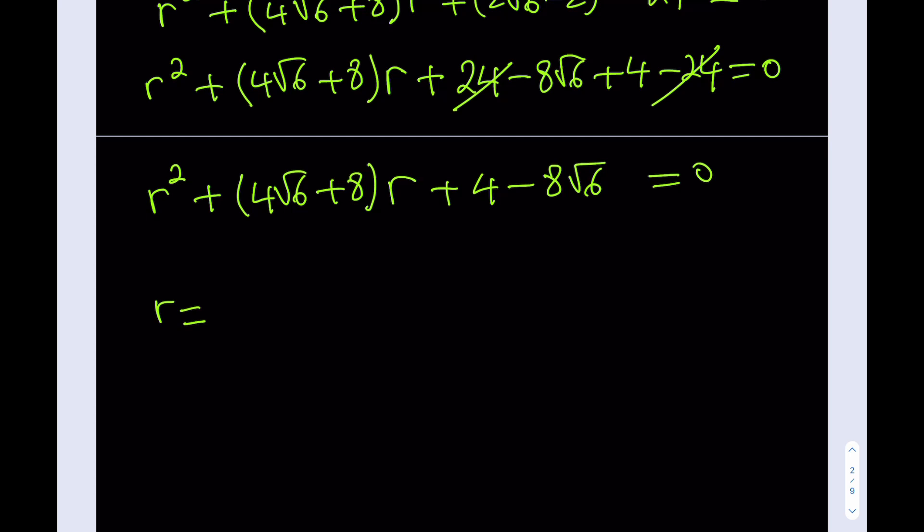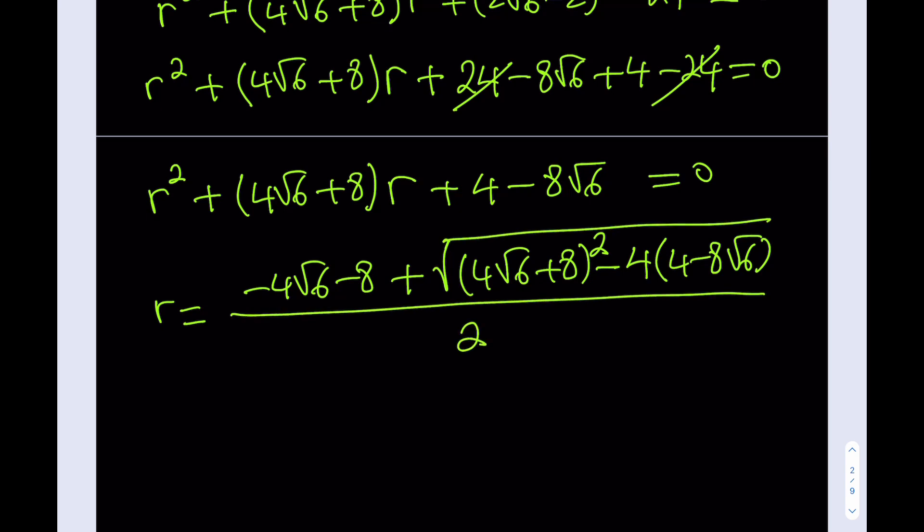r equals negative b, you have to negate this whole thing, plus square root of b² minus 4ac. Now here a is 1 so I can ignore that too, and this is all over 2 times a, which is 2. Awesome.